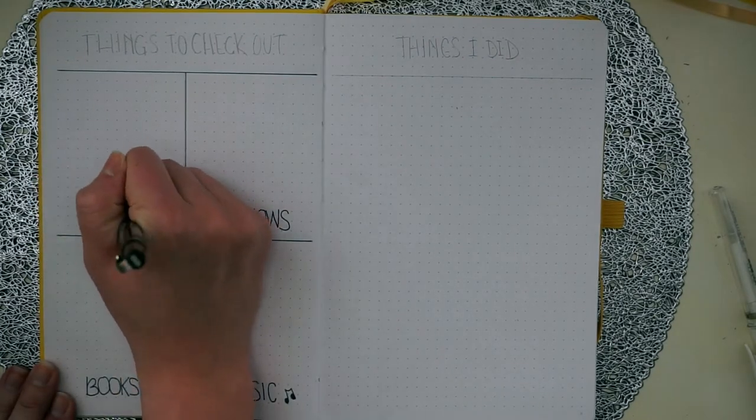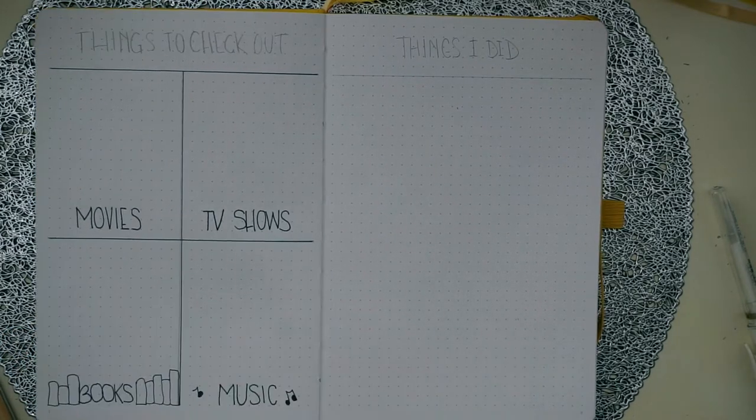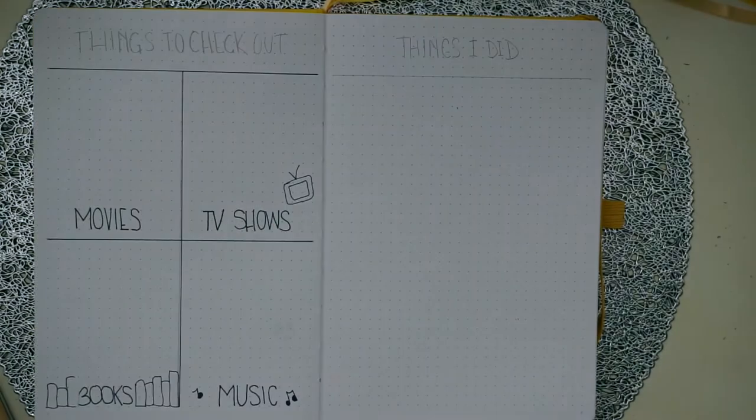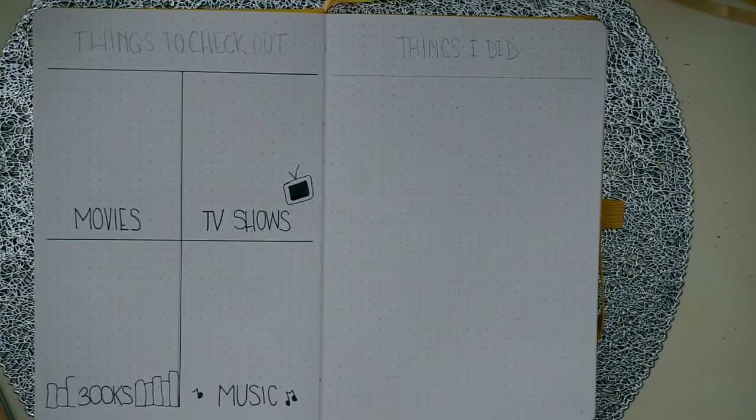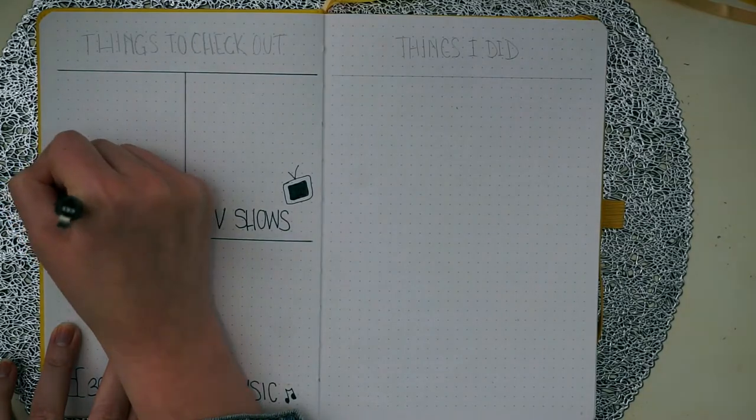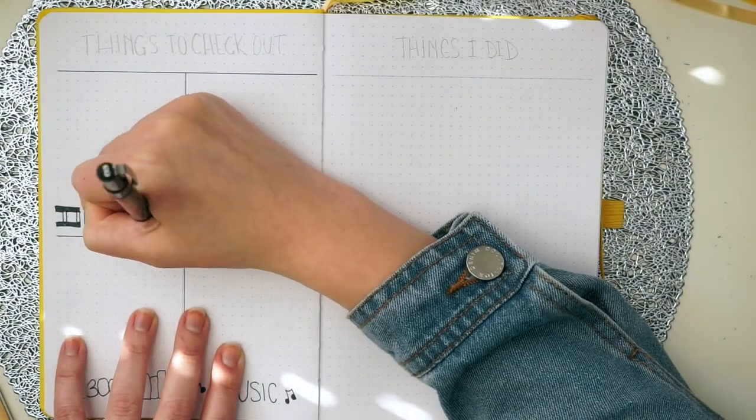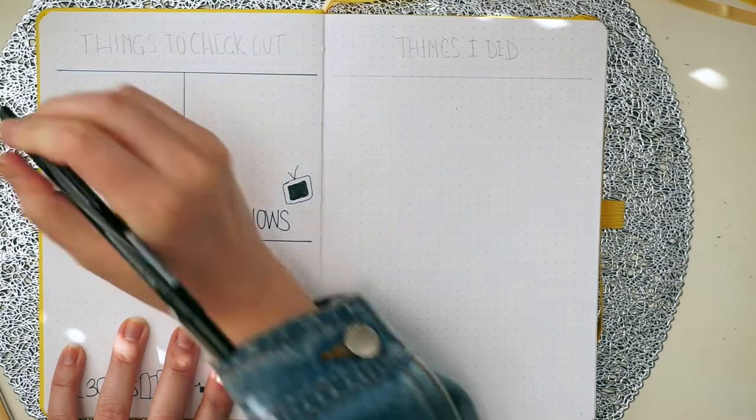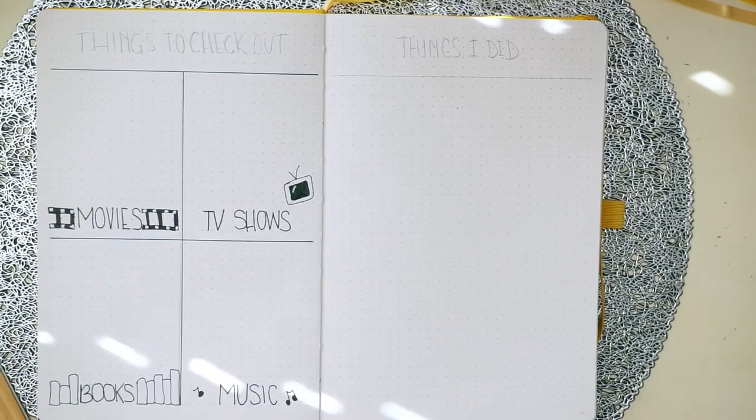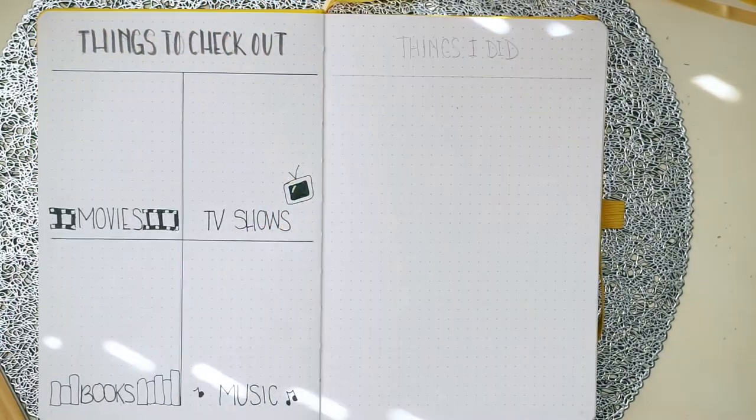I'm using my Prismacolor fineliner in 03 just to have some bolder lettering and I'm just doing a few little doodles. I'm drawing some books, I drew some music notes, here I'm drawing a little TV by the TV shows, and then I drew some film strips. I'm not a pro at this so it's a little wonky but I did my best and I used my white pen to add those details.